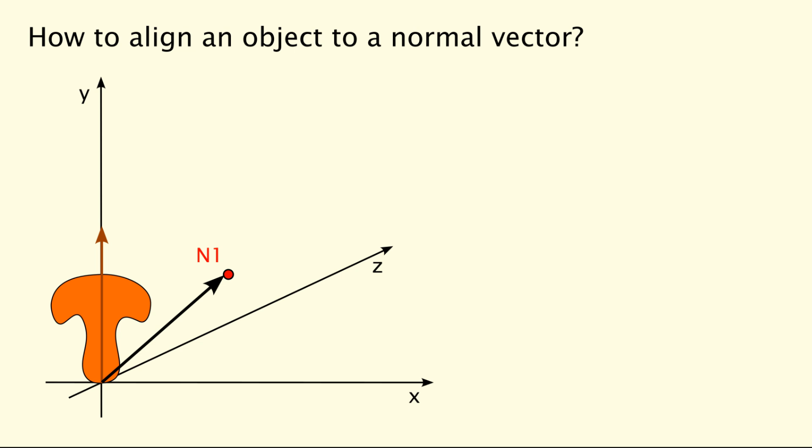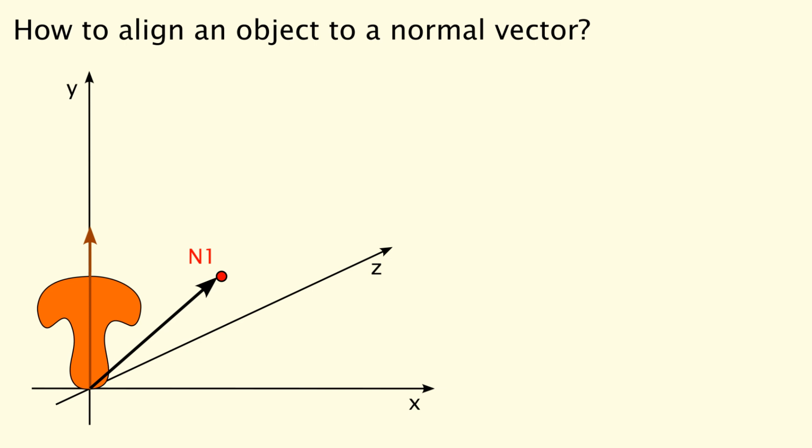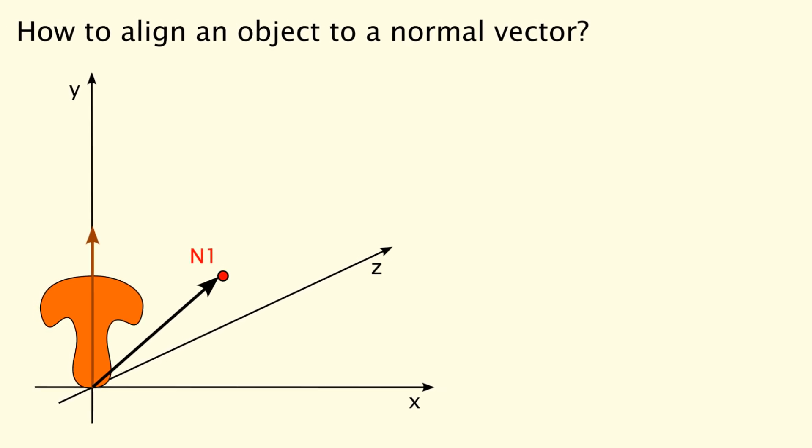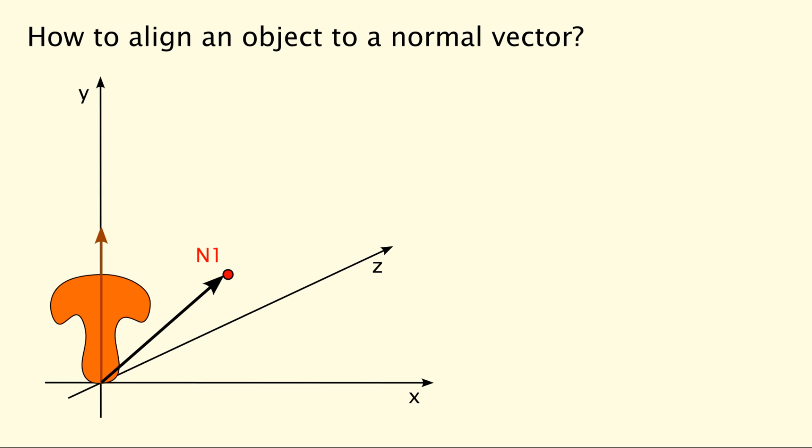How do we rotate our protein into a parallel alignment to the normal vector? First let's assume that the axis of our protein corresponds to the y-axis of the coordinate system. For aligning this axis with the normal vector, we have to do two rotations. First around the z-axis, then around the y-axis.